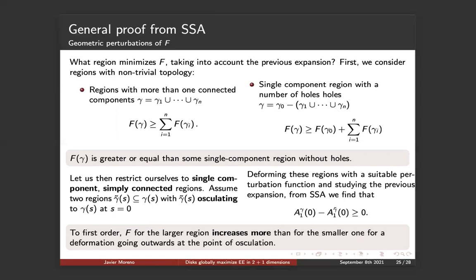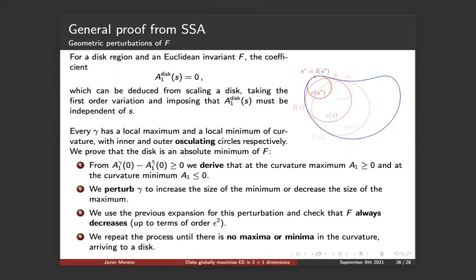And we're going to start assuming two regions, gamma tilde and gamma, that are one oscillating to another at some point X equal to zero. Oscillating meaning that one can inscribe one within the other. Deforming these regions with a suitable perturbation function and studying the previous expansion from strong super-additivity, we're going to find that at first order, we're going to find this relation: A of one gamma minus A of gamma tilde is always greater than zero. In words, this means that to first order F for the larger region increases more than for the smaller one for a deformation going outwards at the point of oscillation. Now, for the disk region and an Euclidean invariant F, the coefficient A of the disk is going to be zero. And this can be deduced from scaling a disk and taking the first order variation and imposing that it must be independent of S, it must be constant.